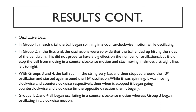Things that I observed while watching my trials was that in group one the ball began rotating in a counterclockwise motion while it was oscillating. Also, in group two during the first trial the oscillations were so wide and long that the ball hit the sides of the pendulum. This did not have that big of an effect on the number of oscillations because the numbers for each trial were very similar, but the ball stopped moving in a counterclockwise motion and stayed swinging in basically a straight line from left to right. With groups three and four the ball started spinning on the string very fast and then stopped at about the 13th oscillation.